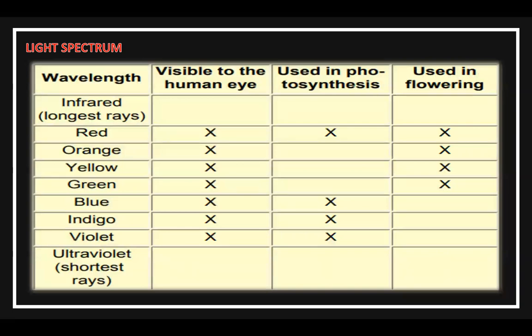This table shows the different wavelength light spectrums — whether they are visible to the human eye, used in photosynthesis, or used in flowering. Infrared is the longest rays and is not visible to the human eye. Red is visible to the human eye, used in photosynthesis, and used in flowering. Orange, yellow, and green are visible to the human eye and used in flowering. Blue, indigo, and violet are visible to the human eye and used in photosynthesis. Ultraviolet is the shortest rays and not visible to the human eye.